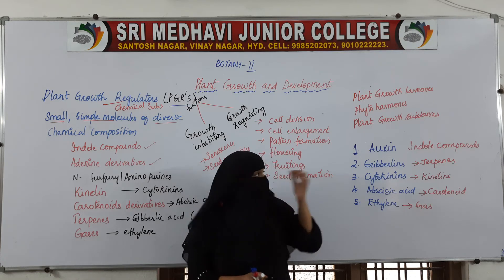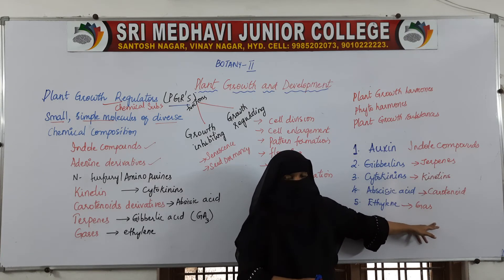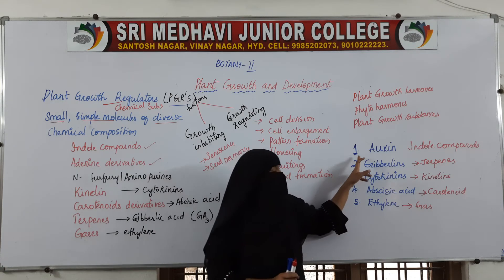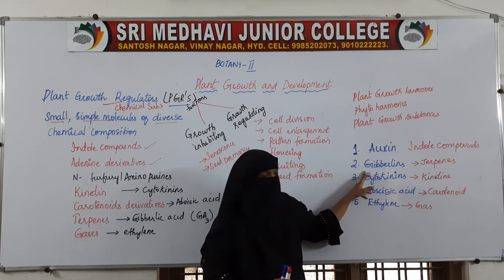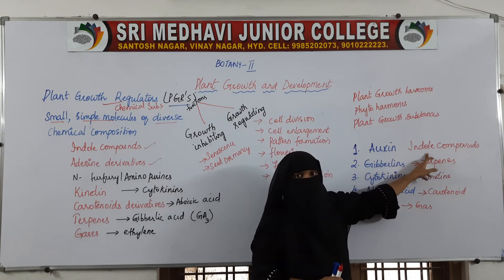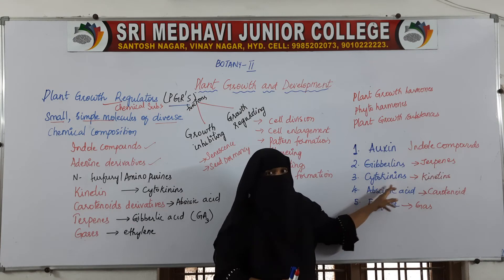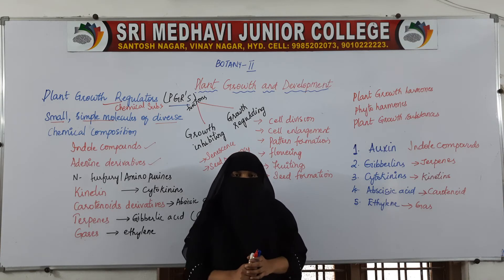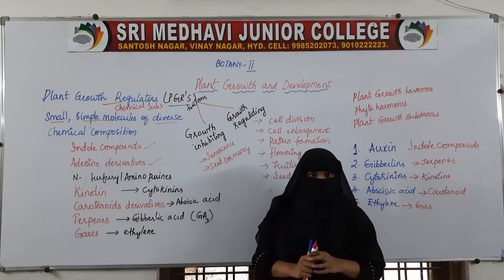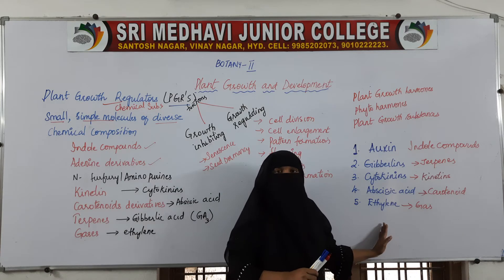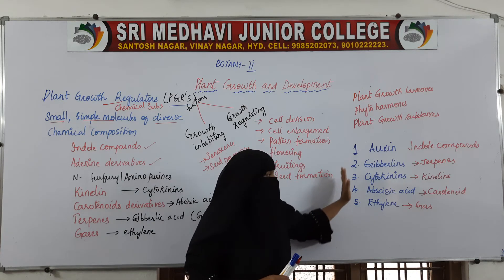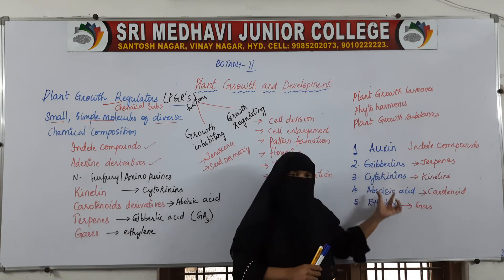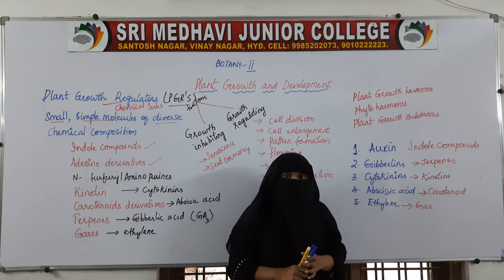We have five plant growth regulating substances, which are small and simple molecules with different chemical compositions. Depending on the functions they perform, these five plant growth regulators are divided into two groups. The first group helps in promoting the growth of the plant, and the second group helps in inhibiting — stopping — the growth of the plant.